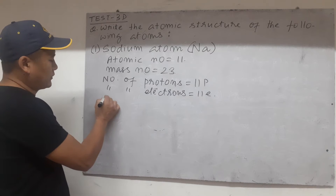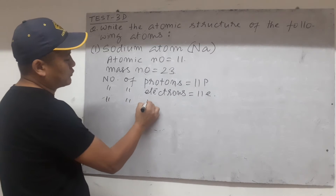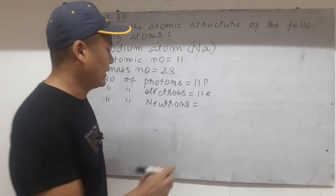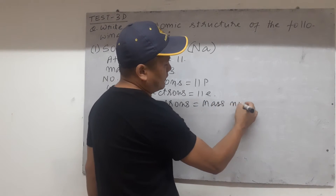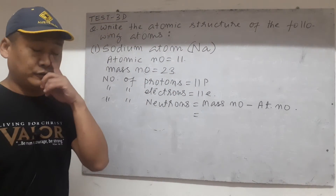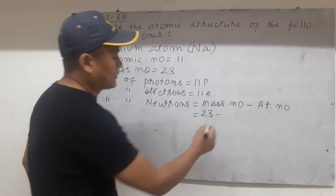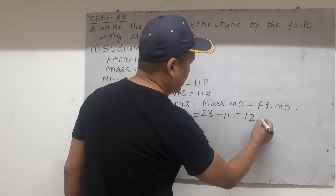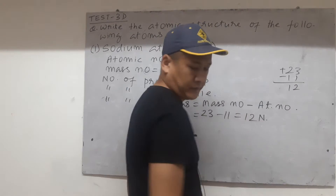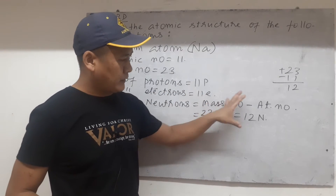We know there are three particles of an atom. The last one is number of neutrons. The three particles found in atoms are protons, electrons, and neutrons. Neutrons are given by the formula: mass number minus atomic number. Mass number here is 23, so 23 minus atomic number 11 is 12. So there will be 12 neutrons. Once you find out how many protons, electrons, and neutrons are there, we can easily draw the atom.